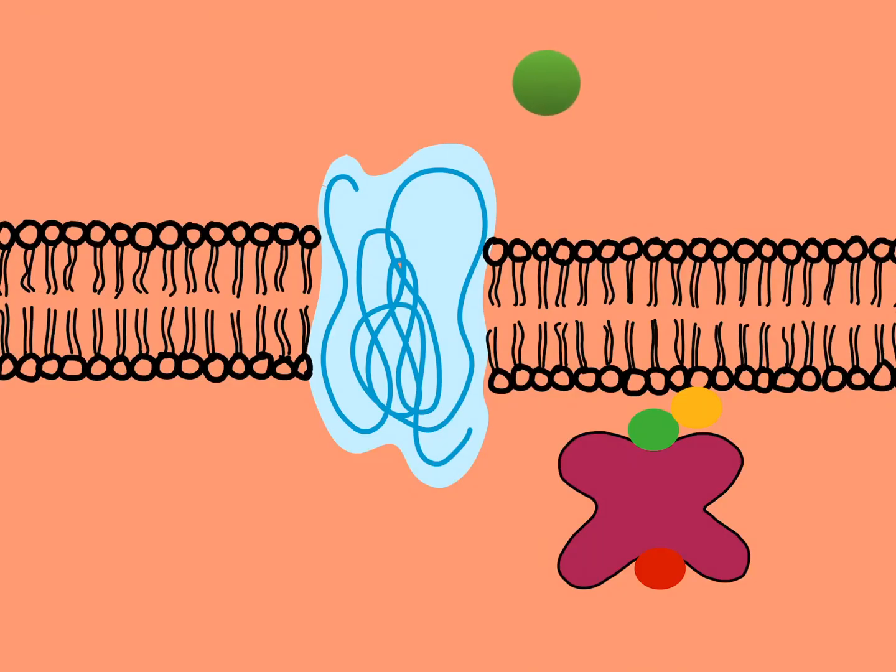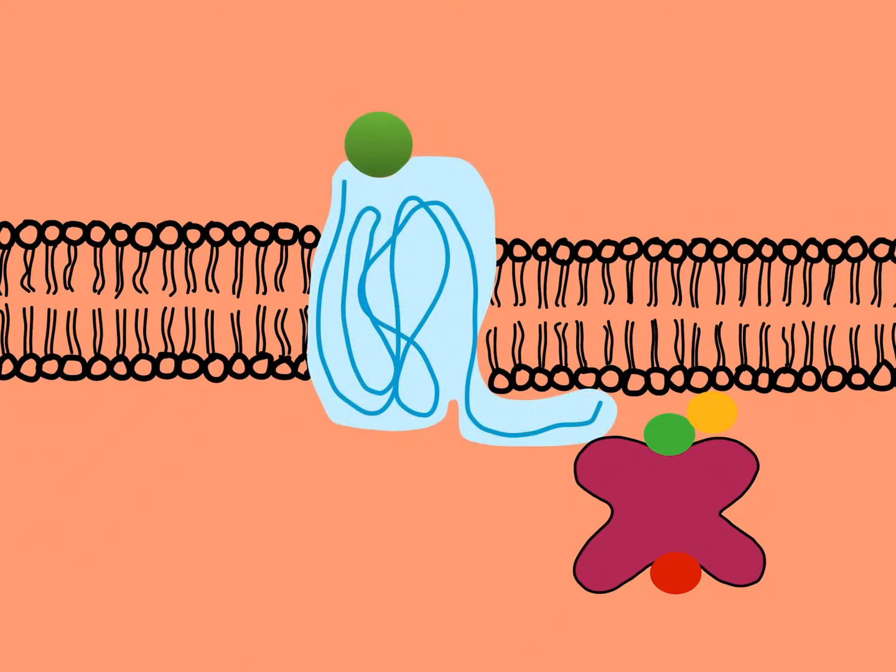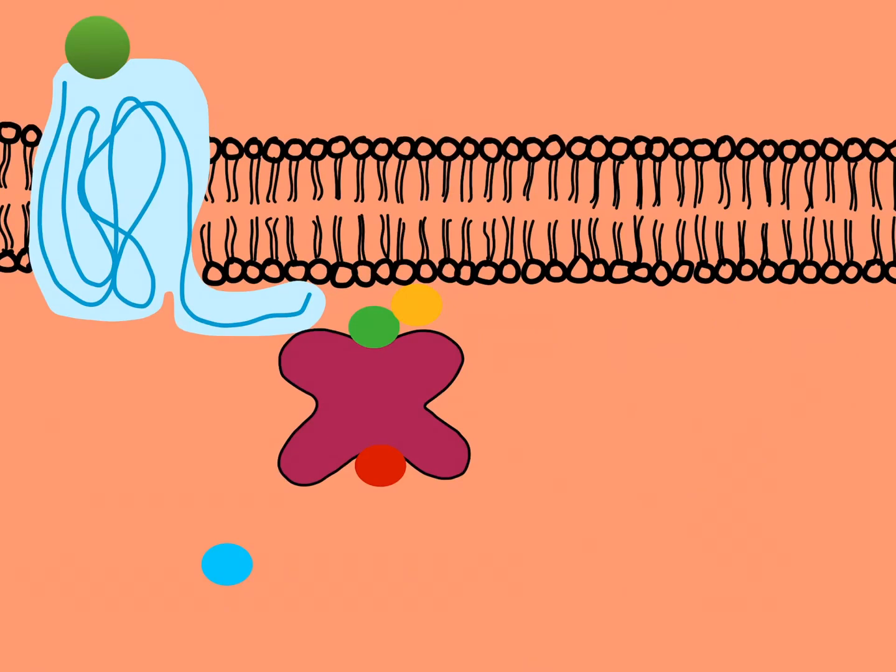When a hormone binds to its specific receptor, the receptor gets activated and interacts with G protein. It is a specialized protein having alpha, beta and gamma subunits. The inactive alpha subunit binds with GDP, but once they get active by conformational change in the receptor.